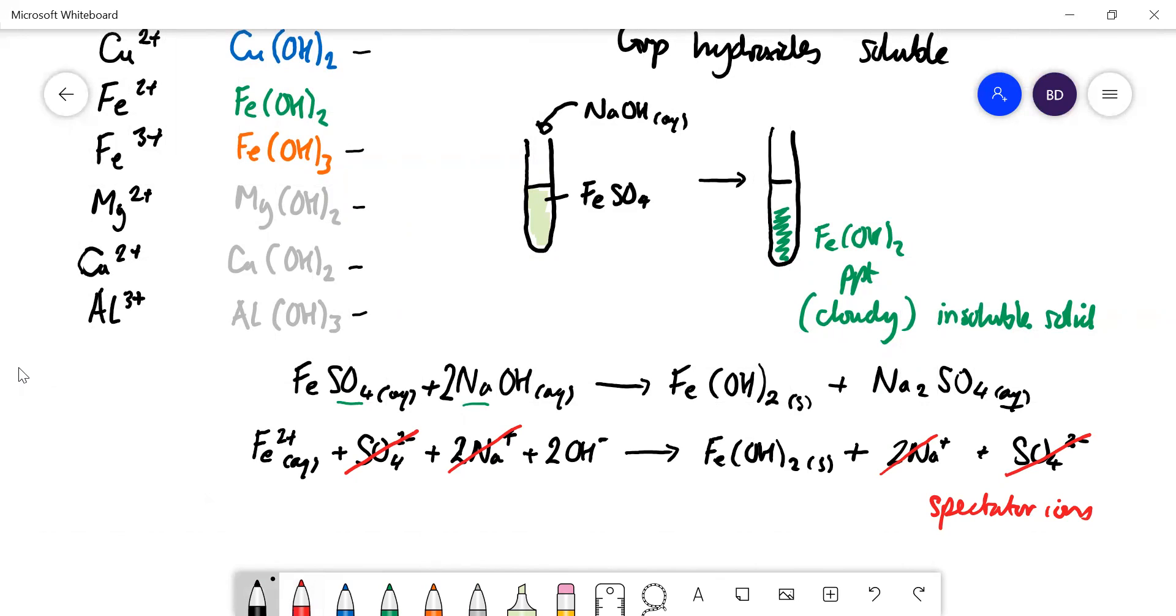We can see really what fundamentally is happening is we've got iron 2+ ions combining with hydroxide ions to form iron 2 hydroxide solid. That tells us the solution must have contained Fe2+ ions. It's the same reactions for all of the others.